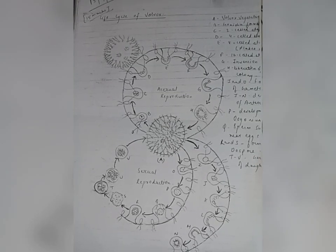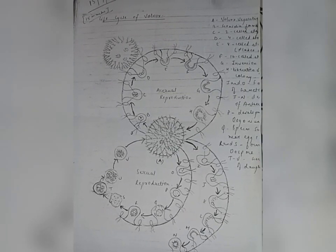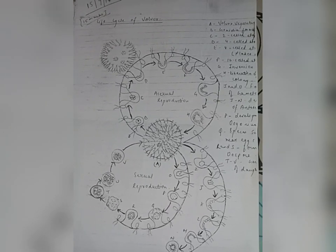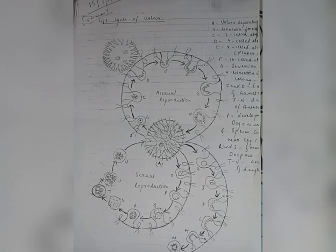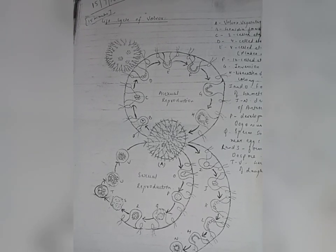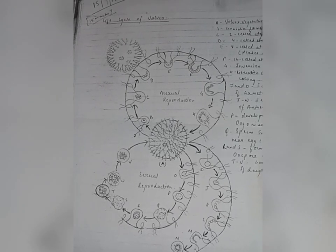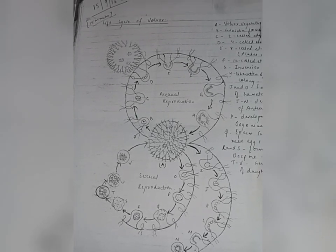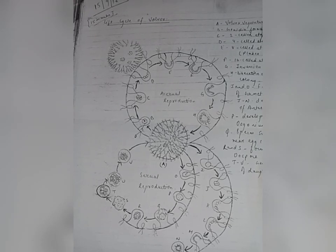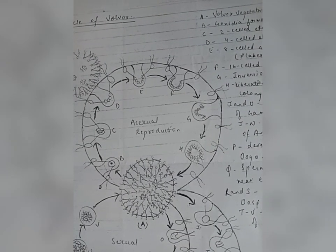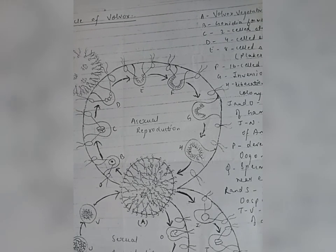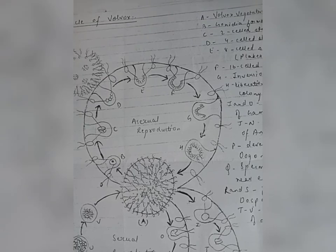The last, tenth topic is the life cycle of Volvox. This is a very important topic. For the exam, this question comes for 15 marks. There are two processes in the life cycle of Volvox: asexual reproduction and sexual reproduction. Note down these notes in your notes copy, because they are remembered while taking down notes.